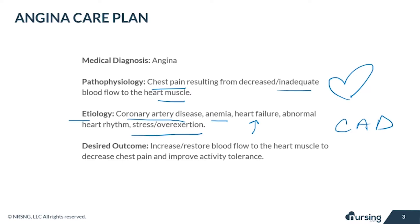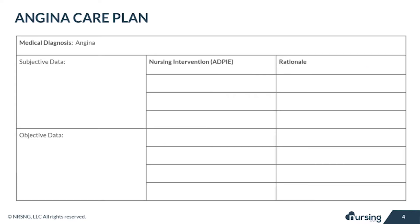The desired outcome for these patients is to increase or restore blood flow to the heart, to decrease chest pain and improve activity tolerance. Here you can see an example of a care plan. Let's walk through this so you can see exactly how a care plan for angina would be completed.